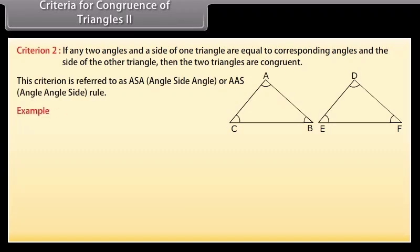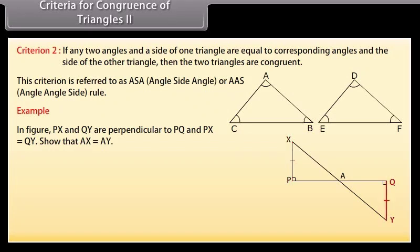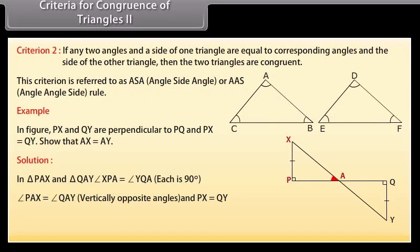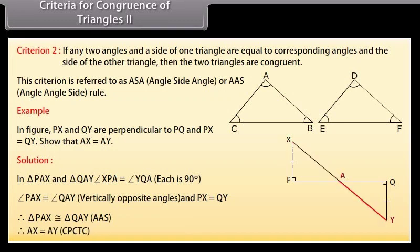Let's solve an example. In the figure, PX and QY are perpendicular to PQ, and PX is equal to QY. Show that AX is equal to AY. Solution: In triangle PAX and triangle QAY, angle XPA is equal to angle YQA because each is 90 degrees. Angle PAX is equal to angle QAY because these are vertically opposite angles, and PX is equal to QY. Therefore, by AAS congruence rule, triangle PAX is congruent to triangle QAY. Therefore, AX is equal to AY by CPCTC.